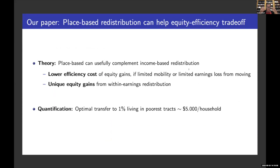In this paper, we're going to re-evaluate the desirability of using place as a redistribution tool, because in practice all forms of redistribution are distortionary. Place-based redistribution distorts location choices, but income-based redistribution distorts labor supply choices. The question we want to ask is: does using place as an index for redistribution help improve the equity-efficiency trade-off we face as a society? We find that place can actually be a useful complement to income-based redistribution for two main classes of reasons.